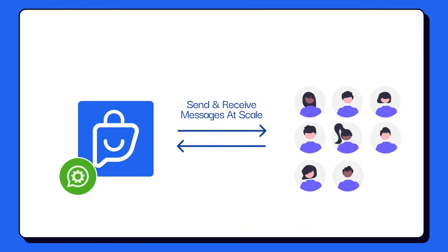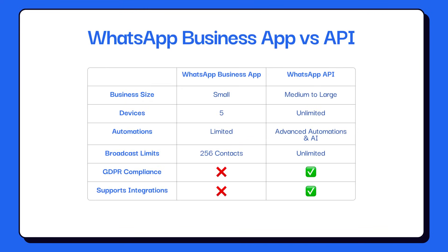You might be wondering: what's the difference between the WhatsApp Business app and the API? Basically, the WhatsApp Business app is meant for micro to small businesses. It offers limited capabilities when it comes to multi-user access and broadcast automation, making it challenging to manage conversations at scale.